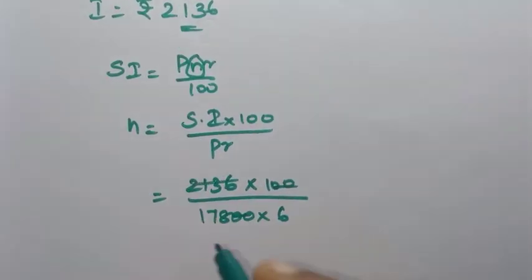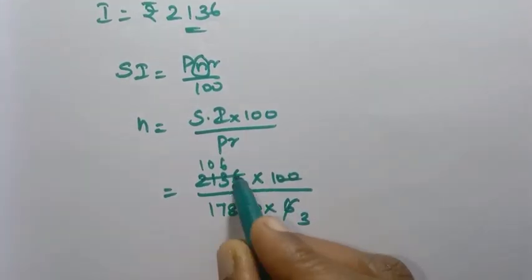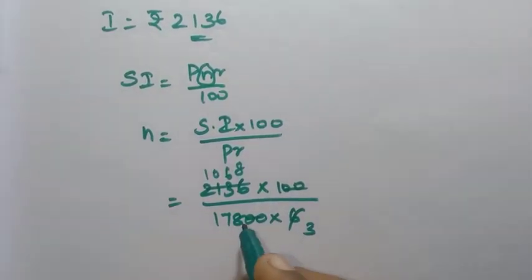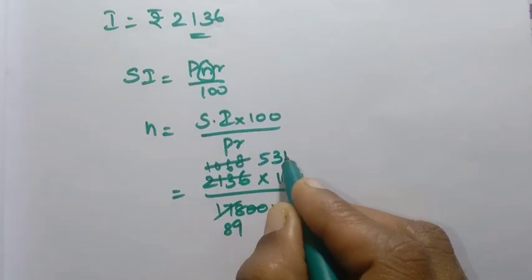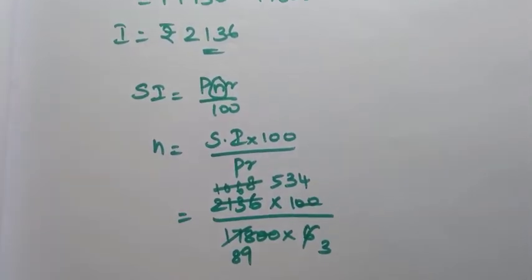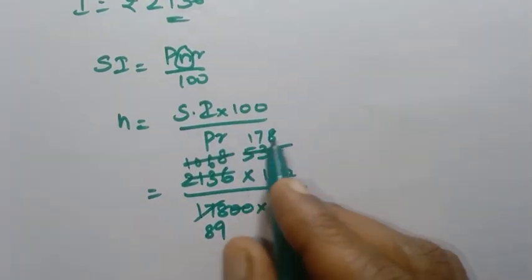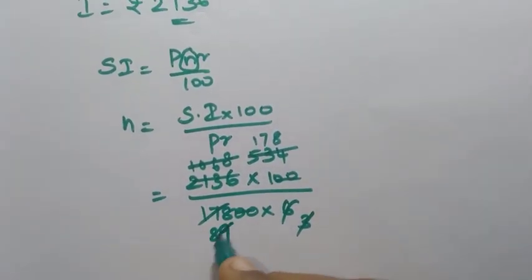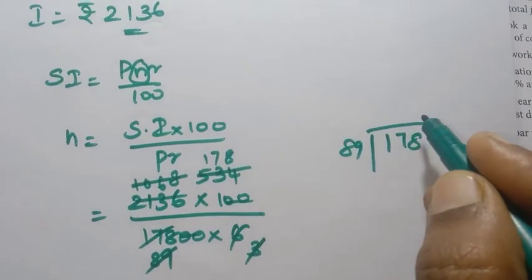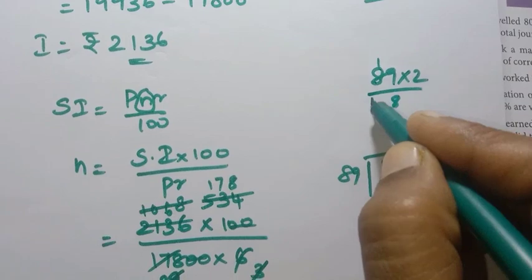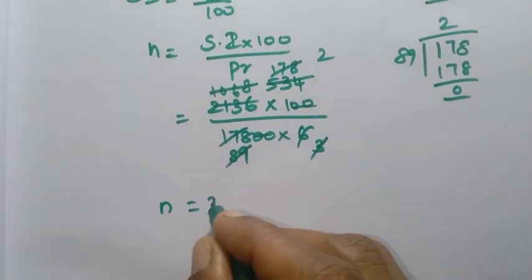Cancelling zeros: 2,136 into 100 divided by 17,800 into 6. After simplification, 89 into 2 equals 178, and 178 divided by 89 gives 2. Therefore number of years N equals 2 years.